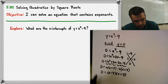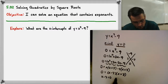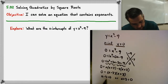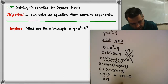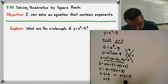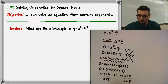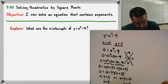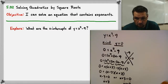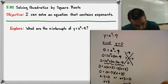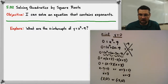We apply the zero product property — when you multiply two things together and get zero, one of them must be zero. So x minus three equals zero, or x plus three equals zero. Solving each: adding three gives x equals three; subtracting three gives x equals negative three. These are the solutions. The question asked for x-intercepts, which are written as coordinates: three comma zero and negative three comma zero.